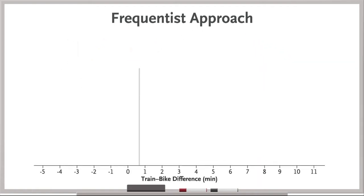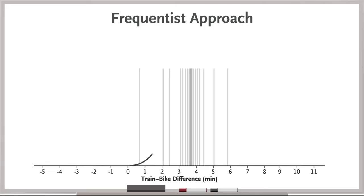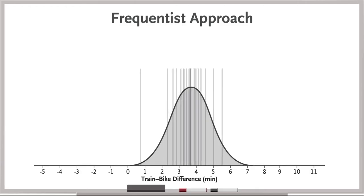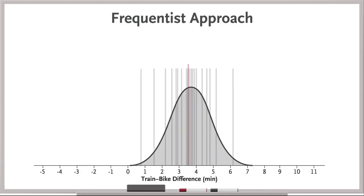Each time you do such a trial, you'll get a different estimate. If you do the trial many, many times, you could plot out the distribution of your estimates. This is the heart of the frequentist approach. Estimates have a random distribution, but the true difference is fixed.